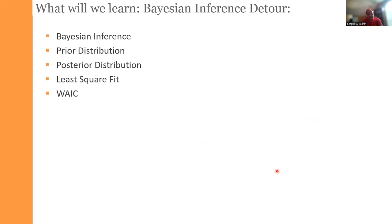There are two sets of concepts we are going to explore today, in a very hands-on fashion. The first is Bayesian inference — we'll look at prior distributions for parameters, the posterior, and compare it to least square fits. The second, as you can guess, is structured Gaussian processes, which in some sense is a hybrid of Bayesian inference and Gaussian processes.